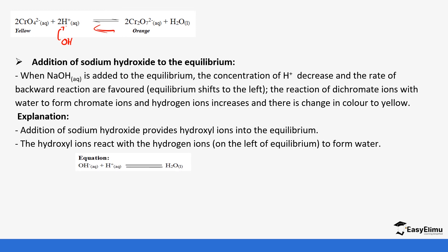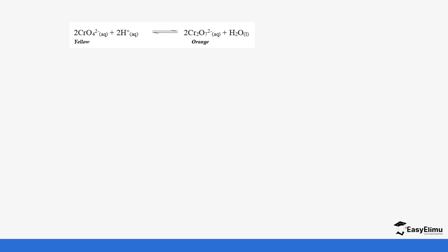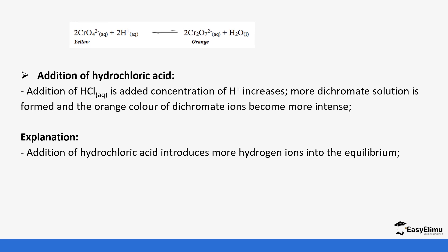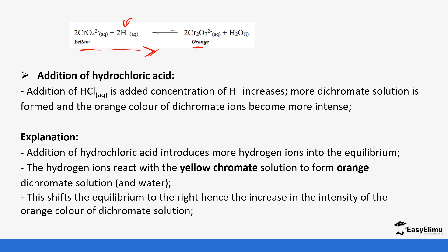You will notice that more of the yellow solution is going to be formed as the equilibrium shifts to the left with formation of more reactants. When we add hydrochloric acid, the effect is opposite — the addition of hydrogen ions increases in the system and more of the dichromate solution is formed, so the orange color becomes more intense. This is because adding more hydrogen ions means the forward reaction must occur to get rid of the excess, hence more of the orange dichromate and water is formed.